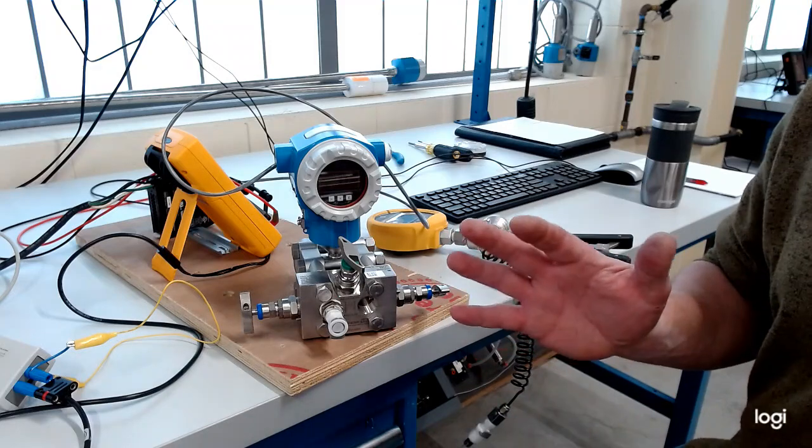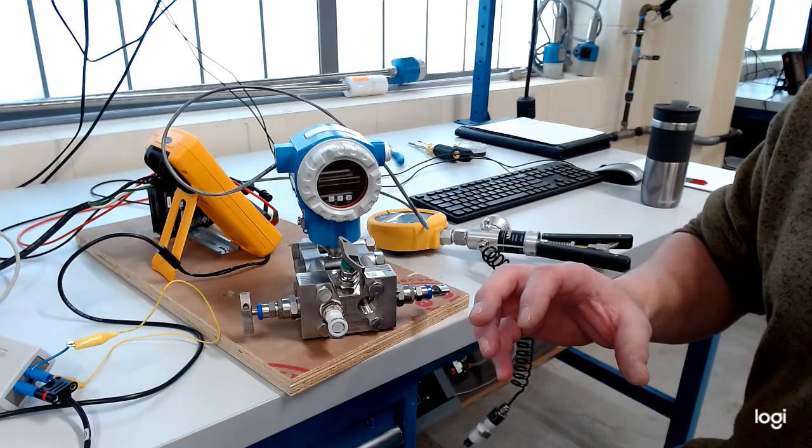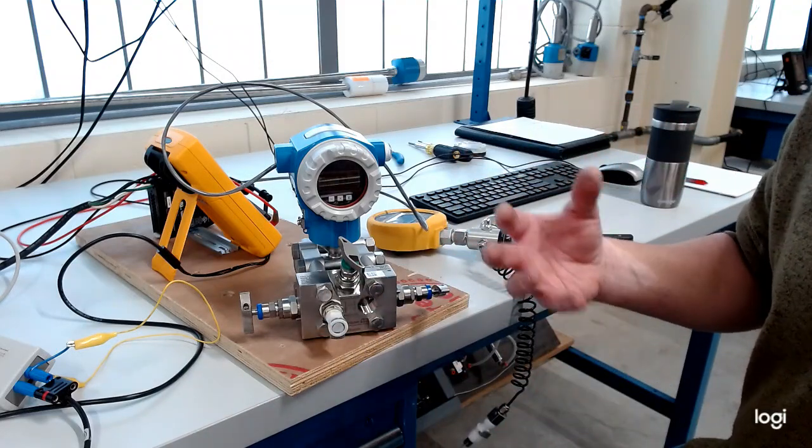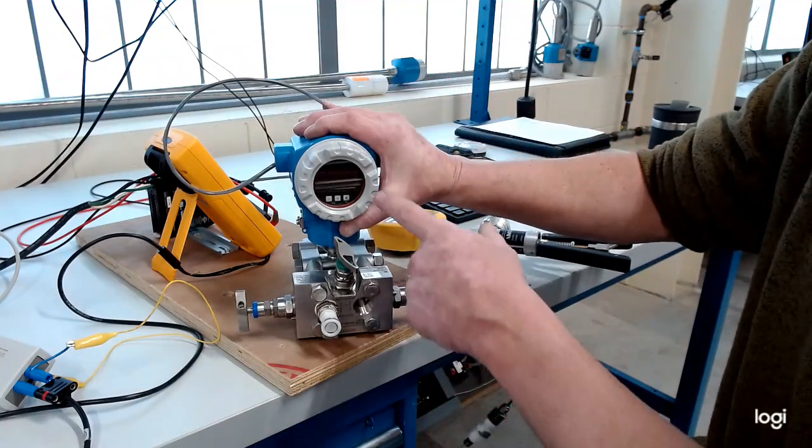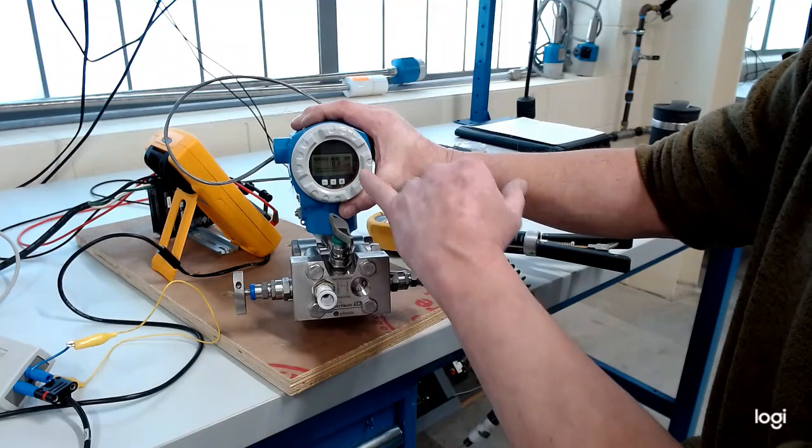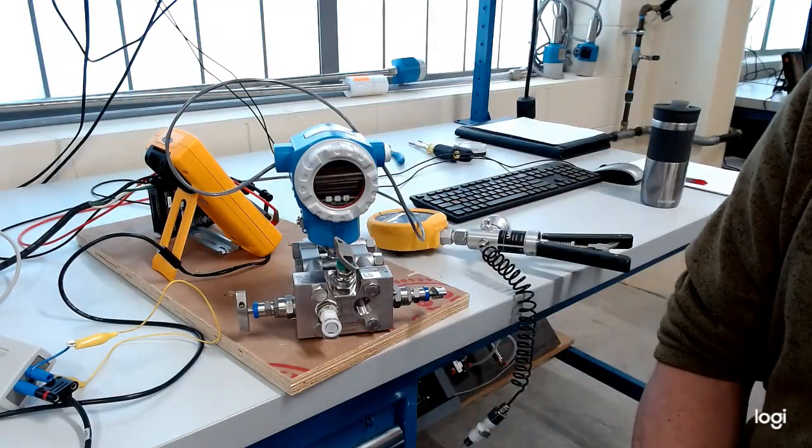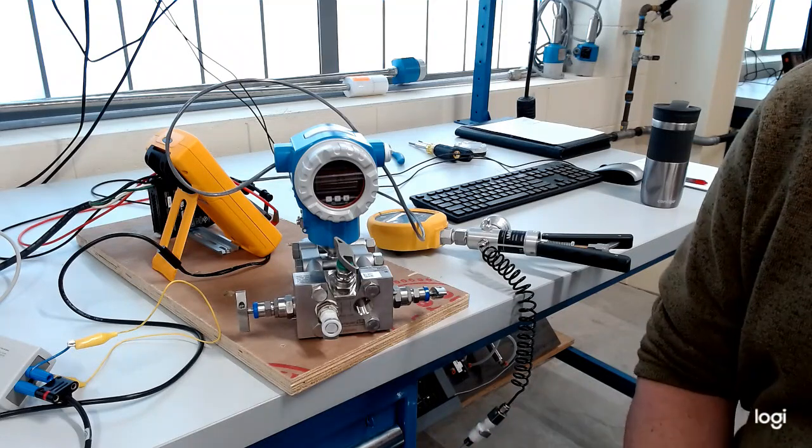And what that does is it equalizes pressure between the high side diaphragm and the low side diaphragm. So essentially, if the pressure is the same both high and low, then the difference in pressure—being a differential pressure transmitter—the difference in pressure with that equalizing valve open is zero. And if you look at the transmitter right here, you can see it's reading 0.0. So that's a good thing.